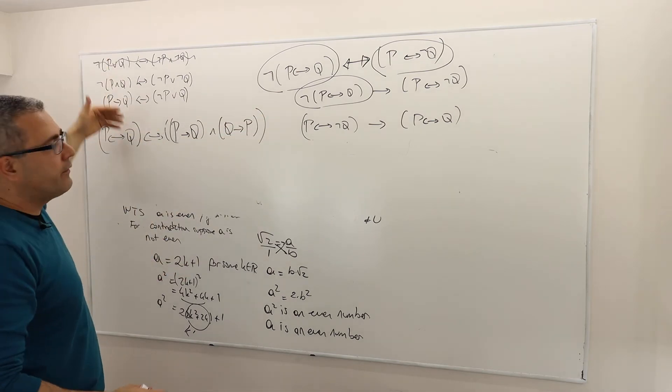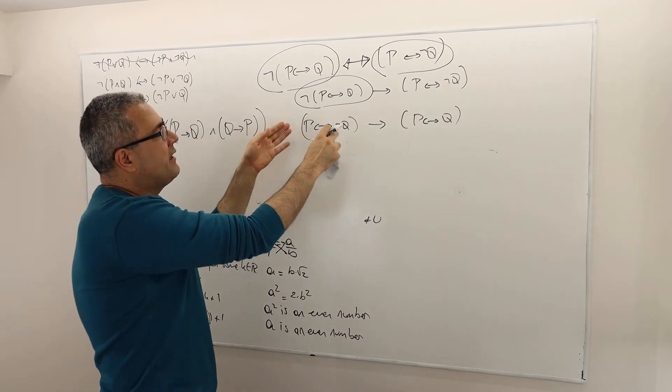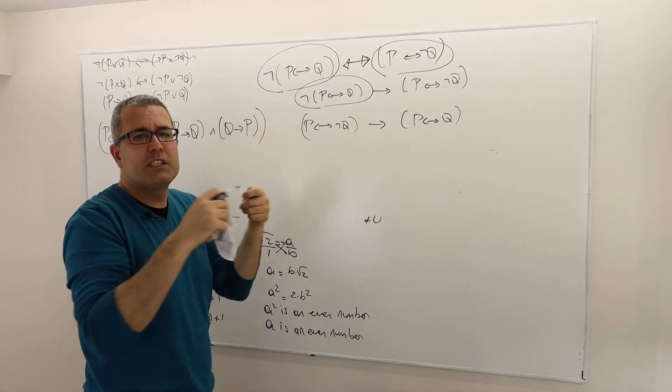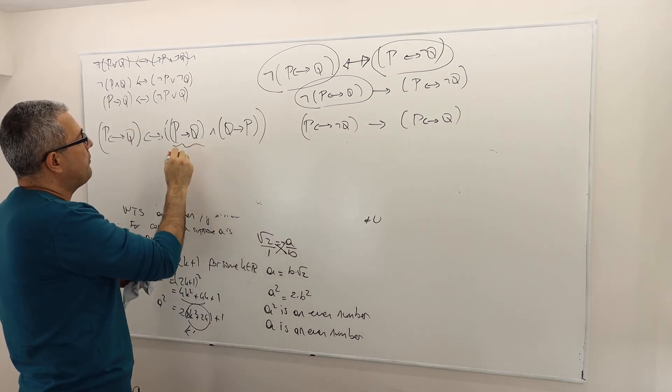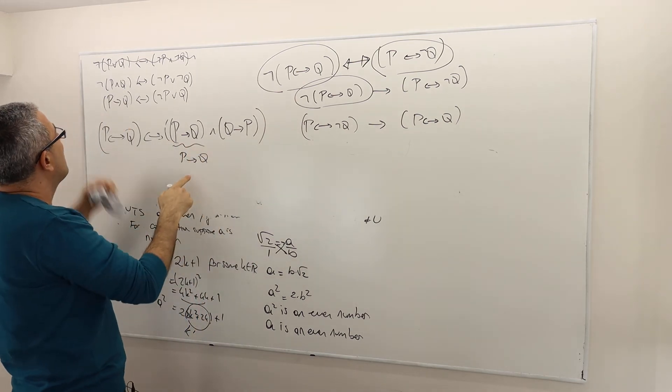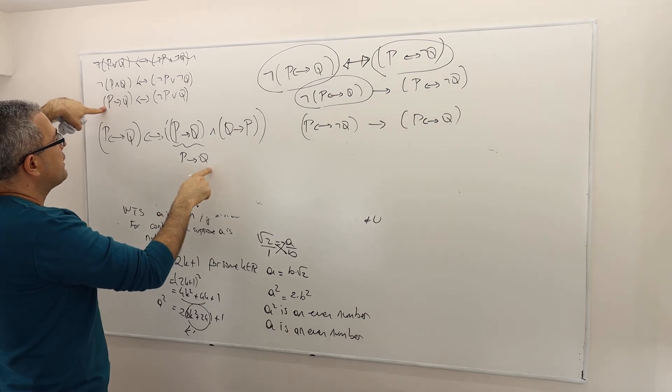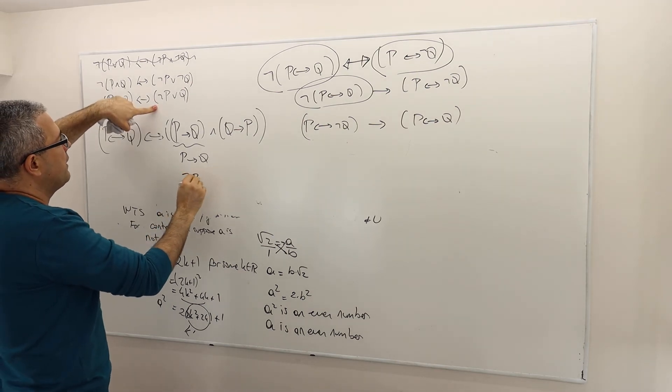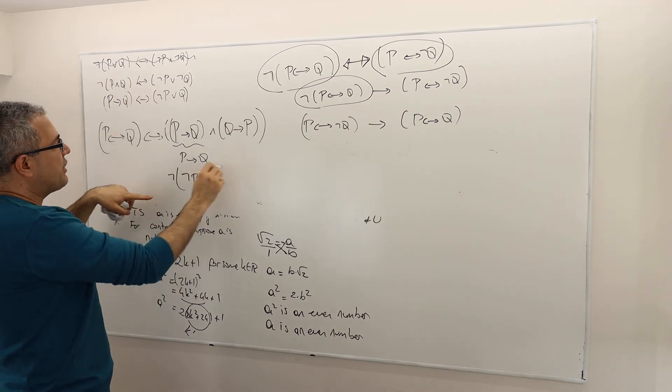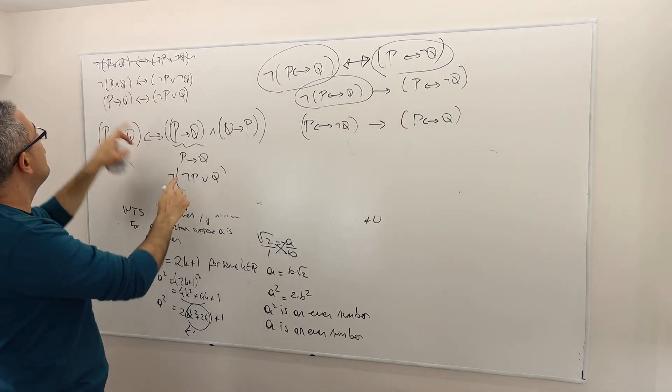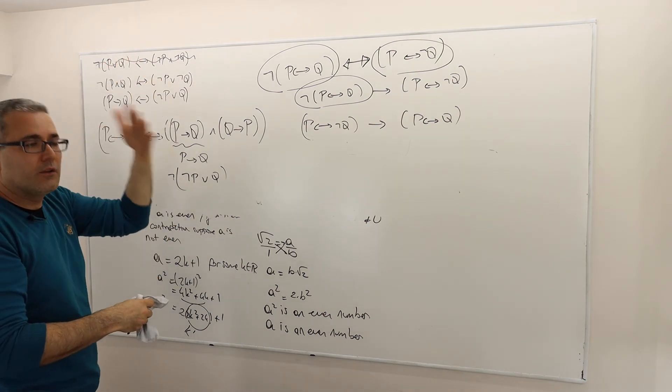And then, so these basically four arguments help you sort of break these statements into smaller pieces. You also, for example, know what P implies Q means, right? According to this, the third argument, P implies Q is, in fact, this guy, not P or Q. All right? So if there's a negation in front of it somewhere, you know how to distribute it thanks to argument one or two.